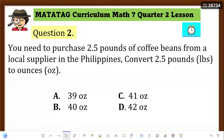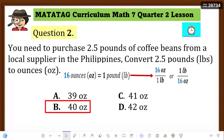Quiz Question 2: The answer is Letter B. The unit fraction used is 16 ounces over 1 pound. Remember, we multiply by 16 because we are converting from pounds to ounces.